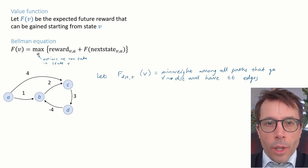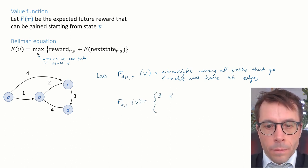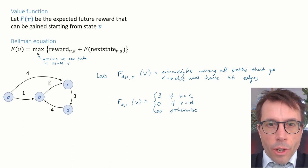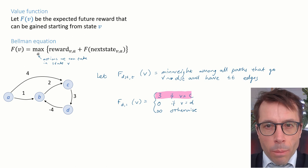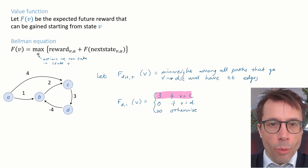We'll see in a moment what this equation has to do with the Bellman equation. But first let's just see how the function behaves in a concrete example. Let's say we're trying to reach the vertex d and we're allowed one edge. What's the minimum weight of all paths from c to d that have at most one edge? There is only one path, the direct path, and it has weight three.